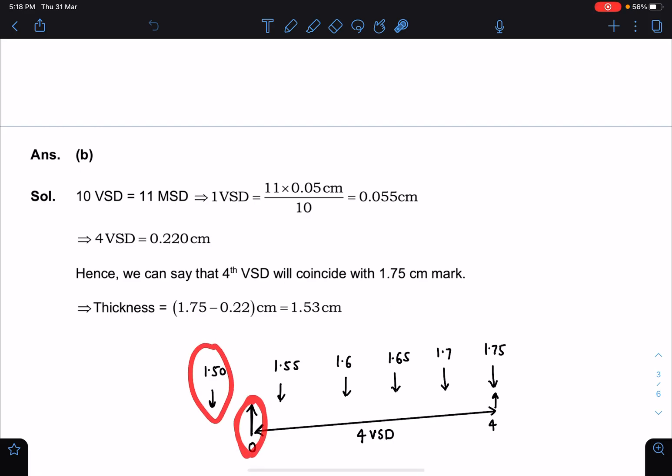The next element, next main scale division will be 1.6, next will be 1.65, next will be 1.7, and next will be 1.75. Just see here, 4 VSD, and this is going to be slightly more than 4 main scale divisions.